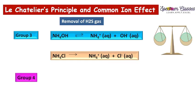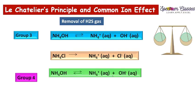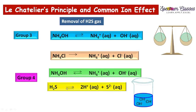Moving to Group 4, this solution already contains NH4⁺, OH⁻, and NH4Cl. In the presence of excess NH4OH, we now add H2S gas, which dissociates as 2H⁺ plus S²⁻. The H⁺ ions released from H2S react with the OH⁻ already present in the solution, forming water. This removal of H⁺ ions from the equilibrium shifts the reaction forward.